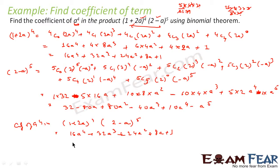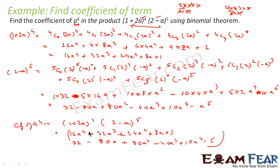We write the second expansion in ascending powers: 32 − 80a + 80a² − 40a³ + 10a⁴ − a⁵. This arrangement ensures that when we multiply terms across the two expressions, the pairs that align give us a⁴. This makes it easy to extract only the terms contributing to a⁴.